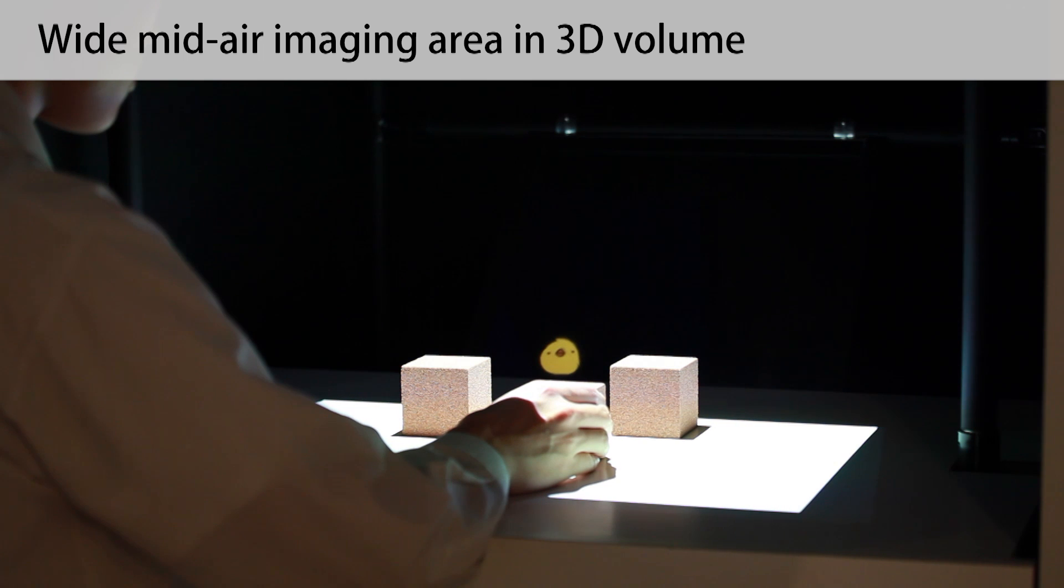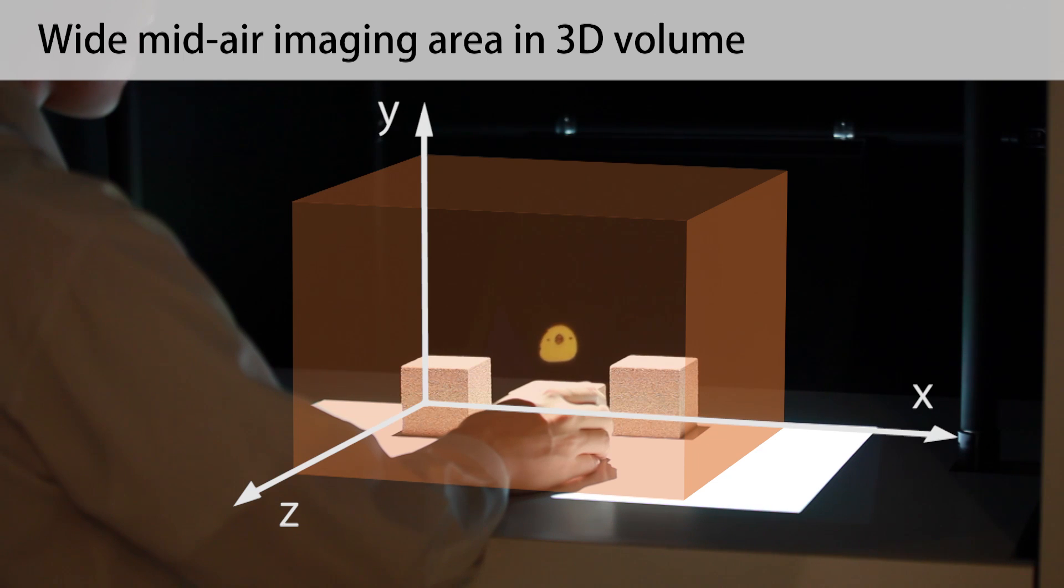Mid-air images can be displayed anywhere inside a rectangular parallel pipe space, 35 cm width, 30 cm depth, and 25 cm height.